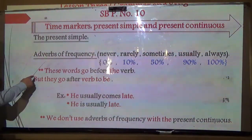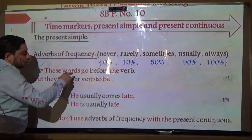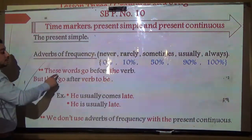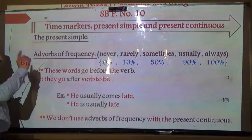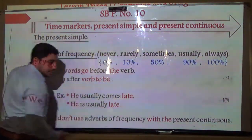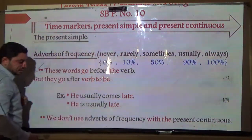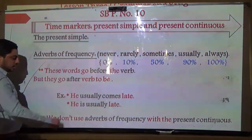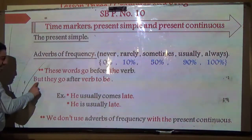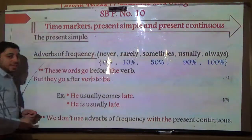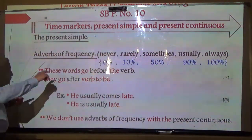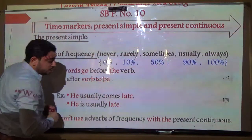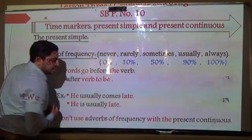Note: these adverbs of frequency come before the verb — for example, 'he usually comes late.' But they go after the verb to be (am/is/are) — for example, 'he is usually late.'